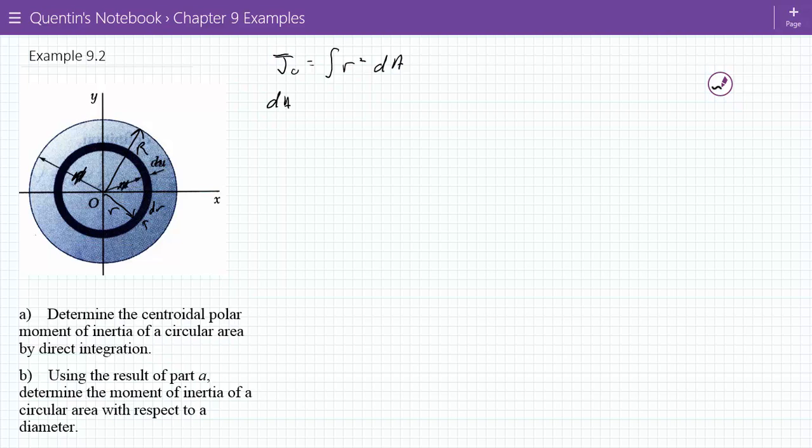So, my dA is what? It's my differential area. What is my differential area? If I was to lay that out, it's the length of that, which is what? 2 pi r times the thickness, which is dr.